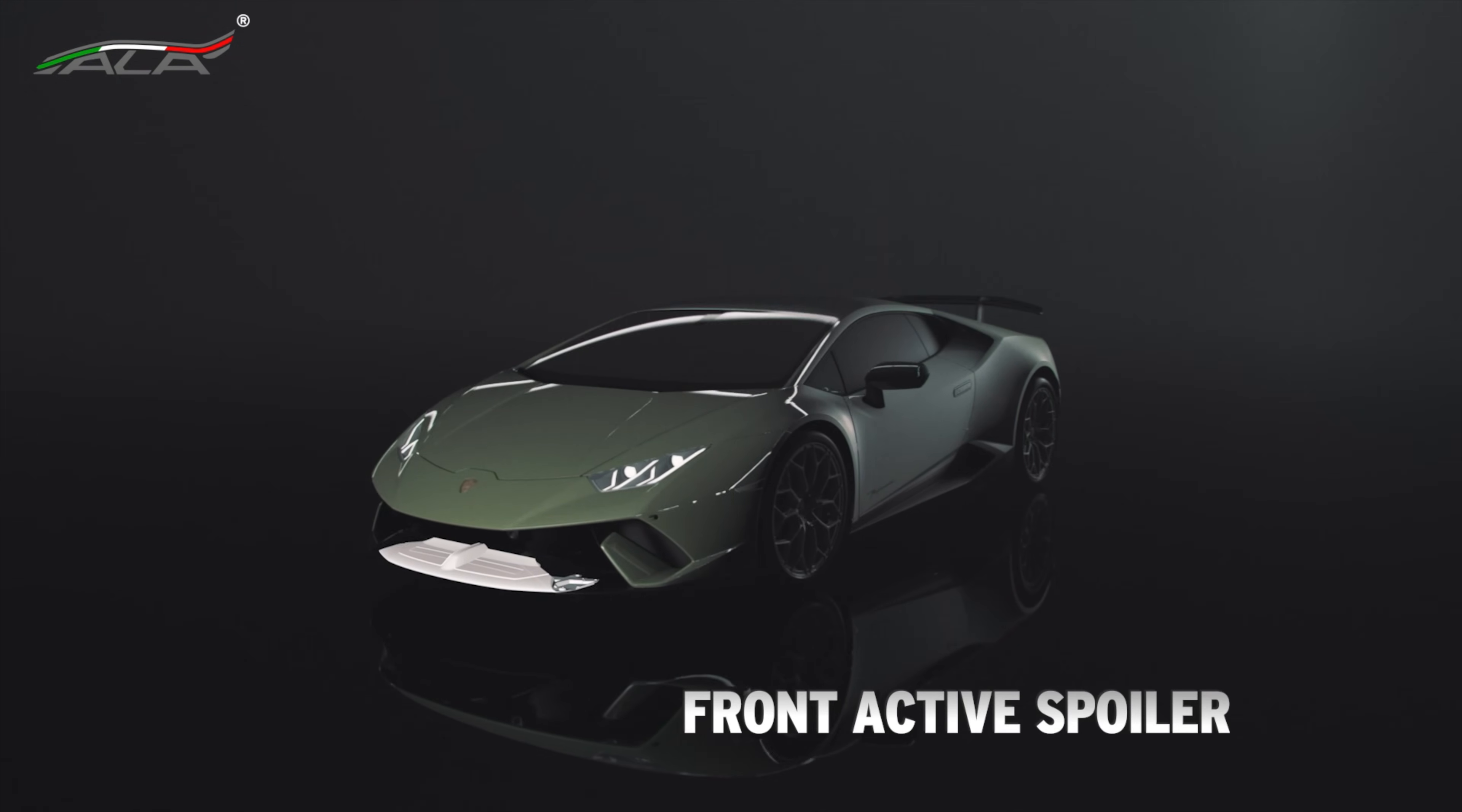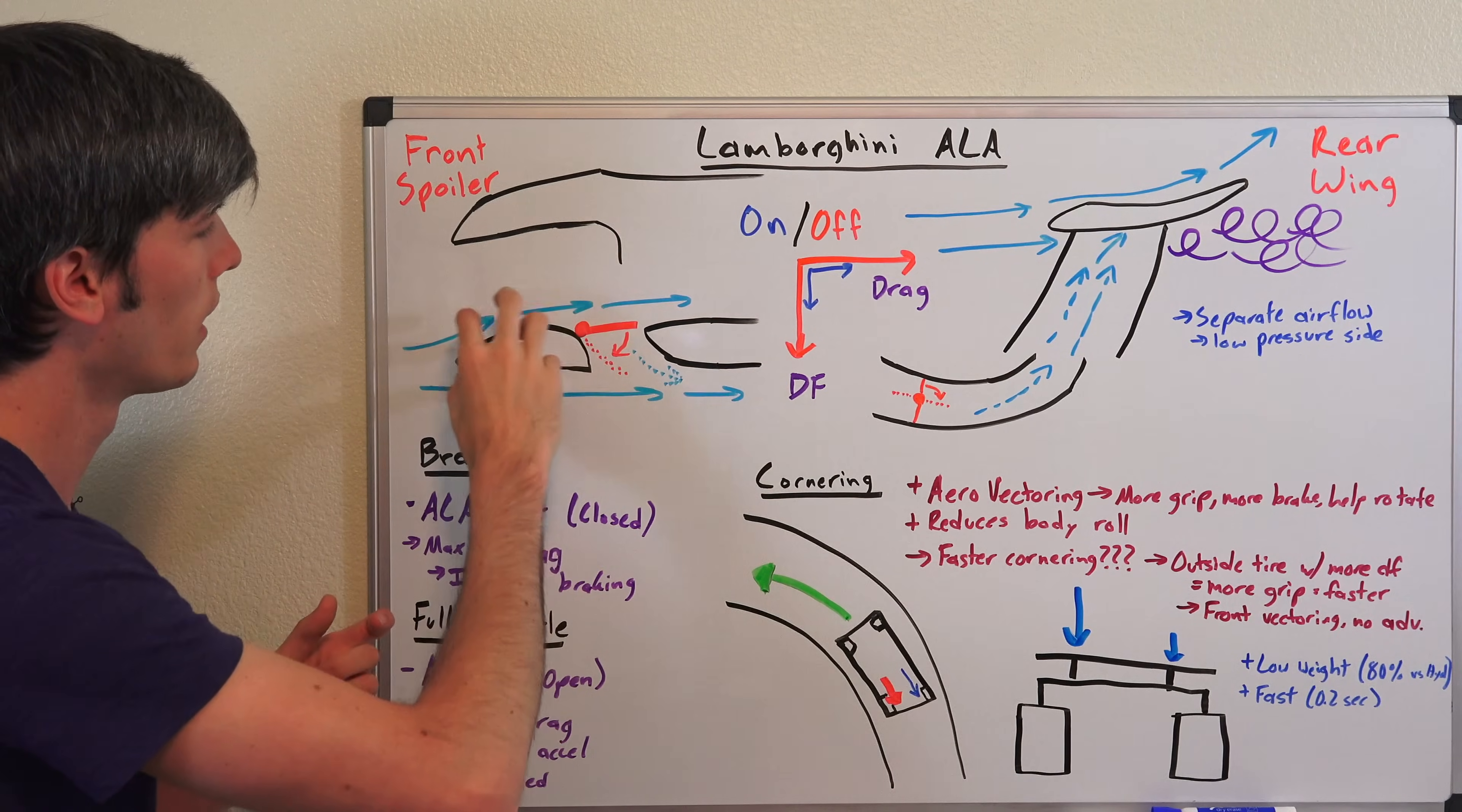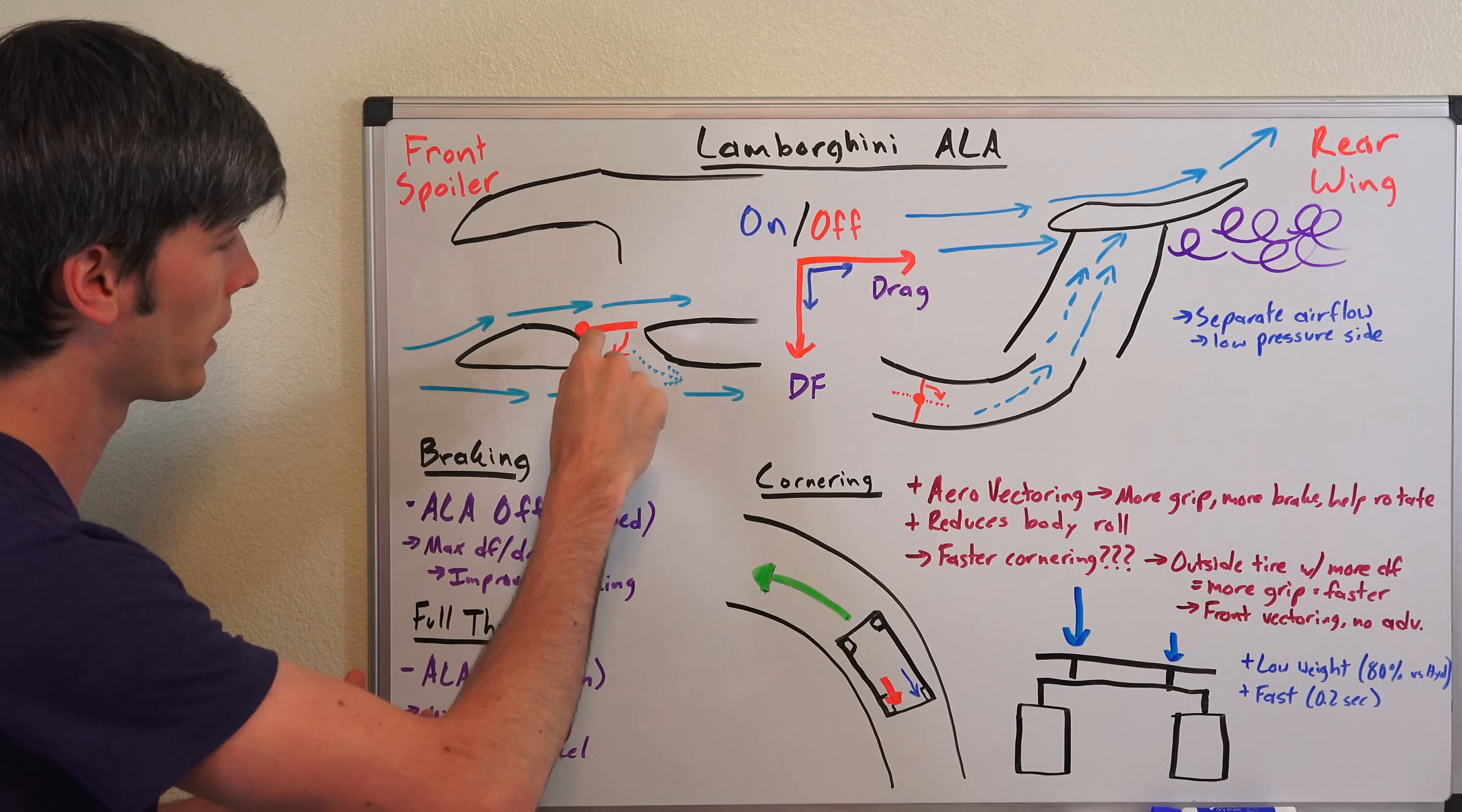How the front of this works is there's a little flap in that front spoiler. When it's closed, air is going to pass through, go through your engine radiator, build up this high pressure area above that front spoiler and then you'll have some air passing underneath. But you're going to have a lot of drag and you're going to have a lot of downforce.